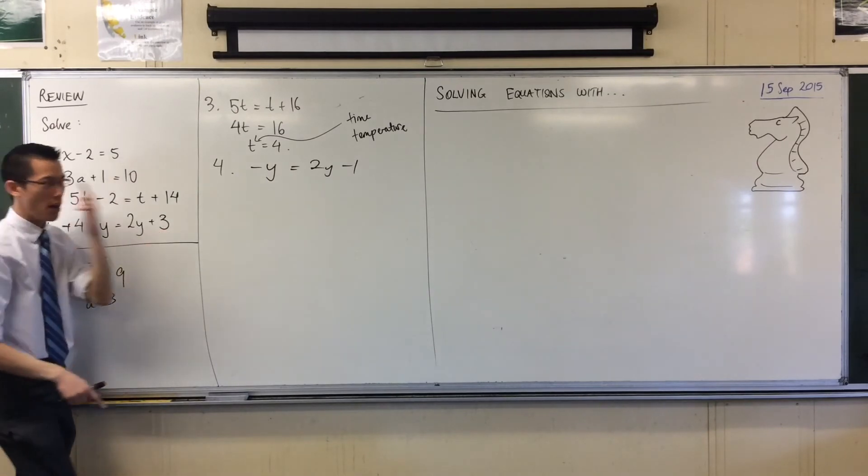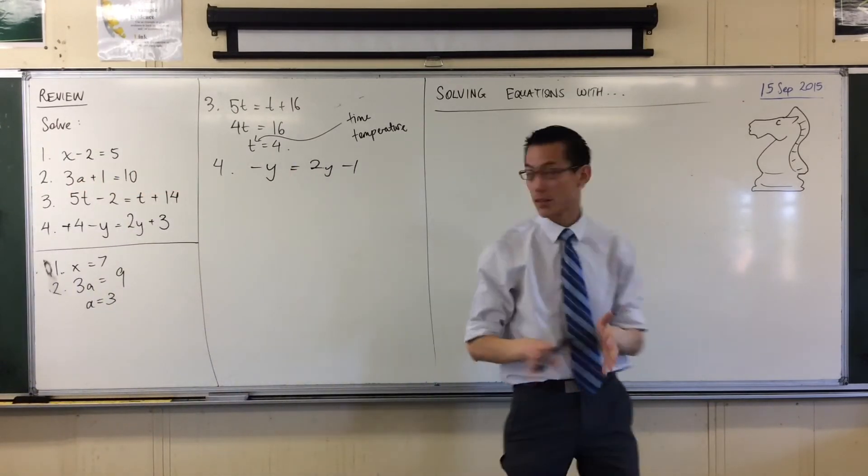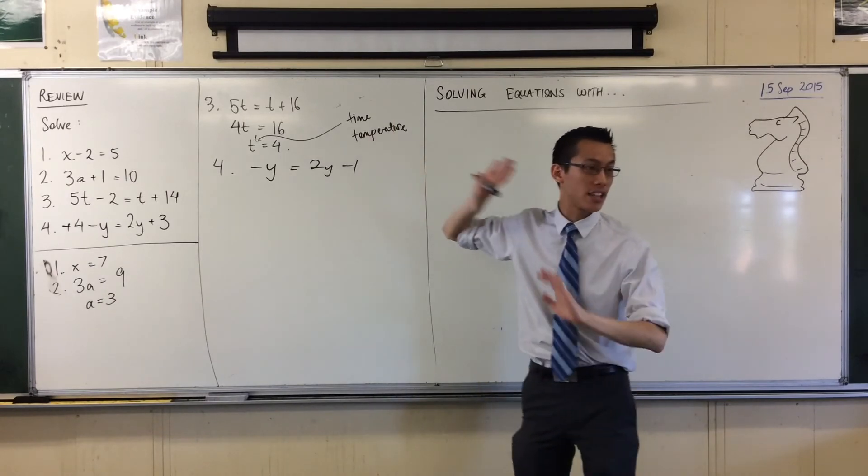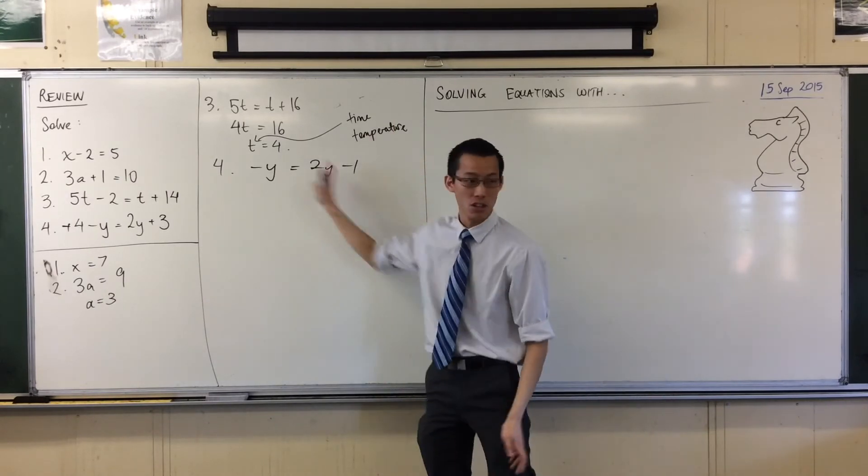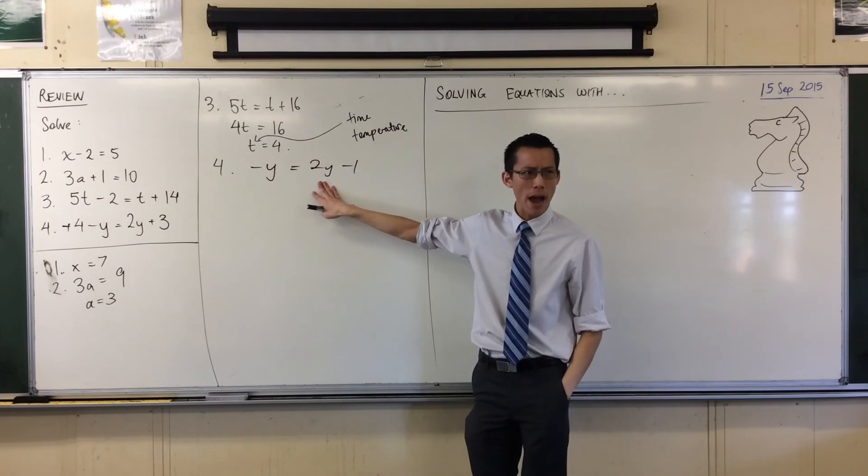Watch out, these negatives flying everywhere, they can really trip you up. 3 minus 4 that'll leave you with minus 1. Great, got all the numbers over on the right hand side. Now I need to get all the y's on the left hand side. How do I get rid of this 2y over here?